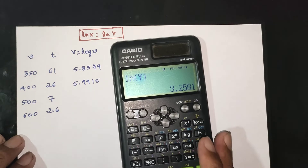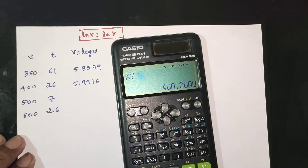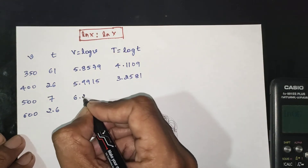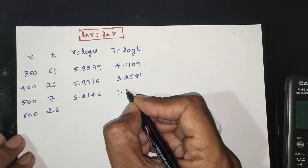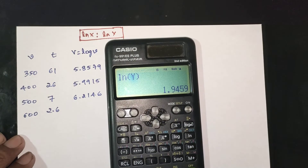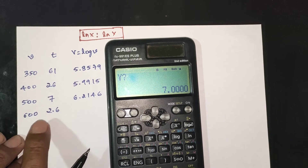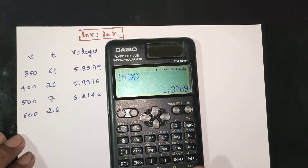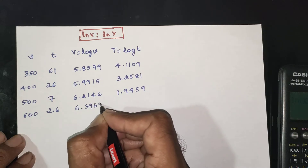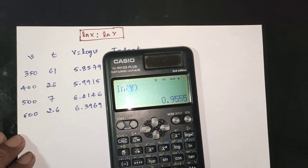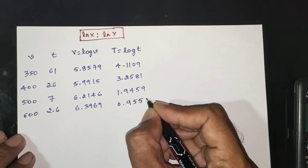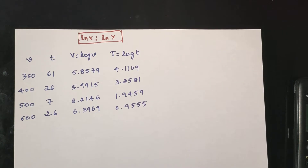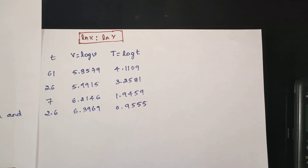Next data point: x = 1.9459 (log 7 area), y = 6.2146. Values 12.093 and 3.786 computed. Next: x = 0.955 (log 2.6 area), y = 6.3969. Value 6.1122. Another entry: x = 0.913, y = 3.521. Computed result 0.93.